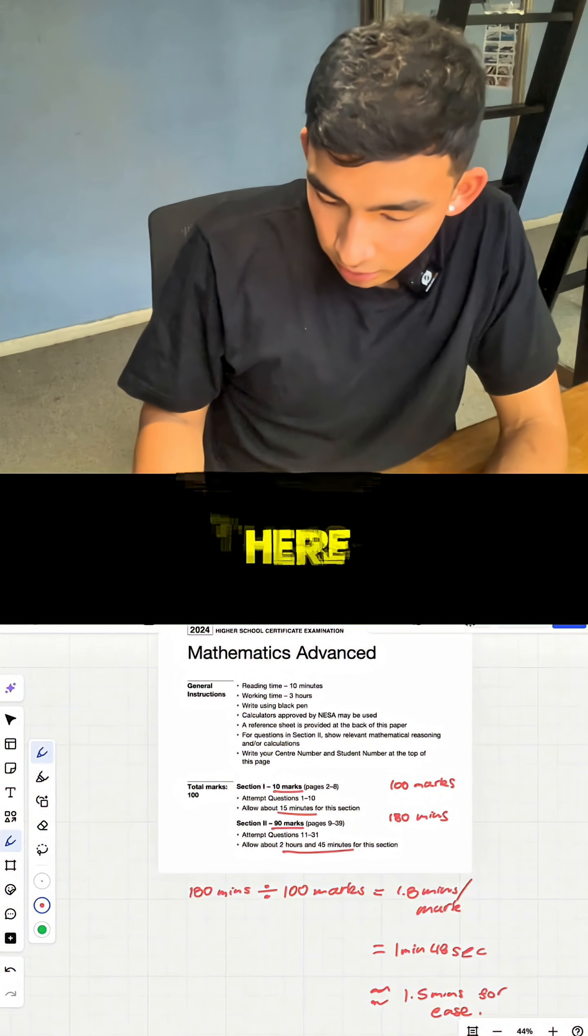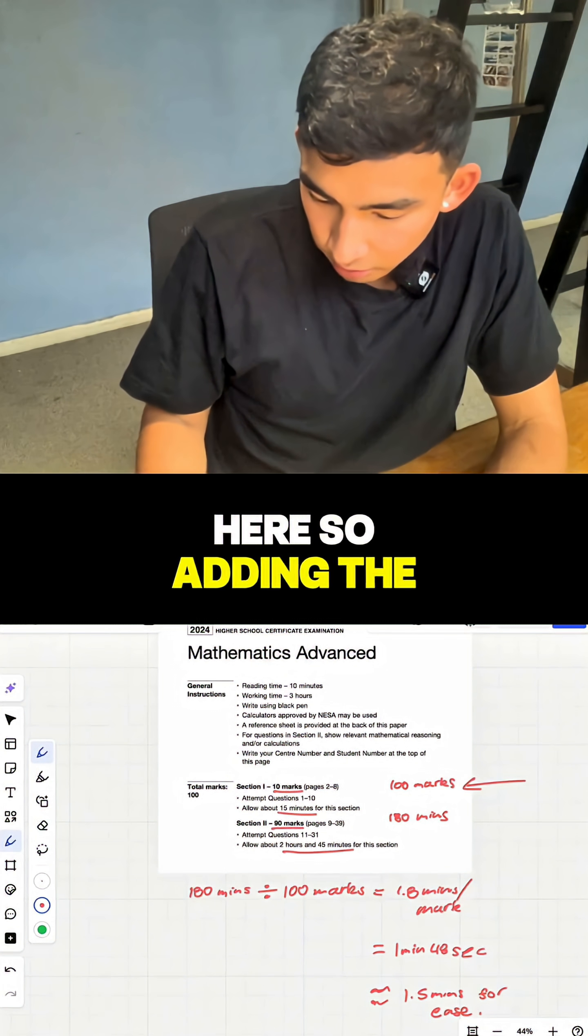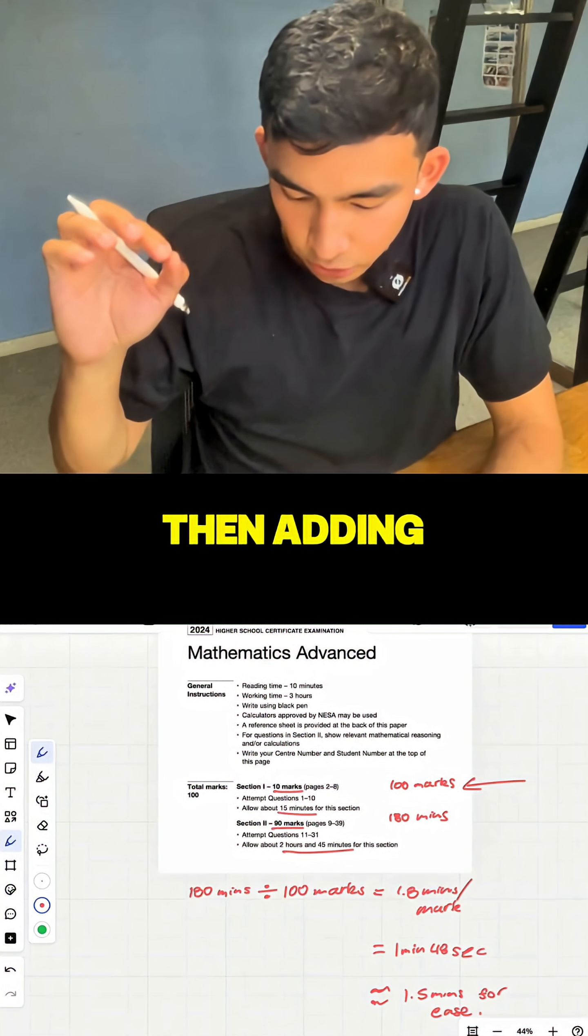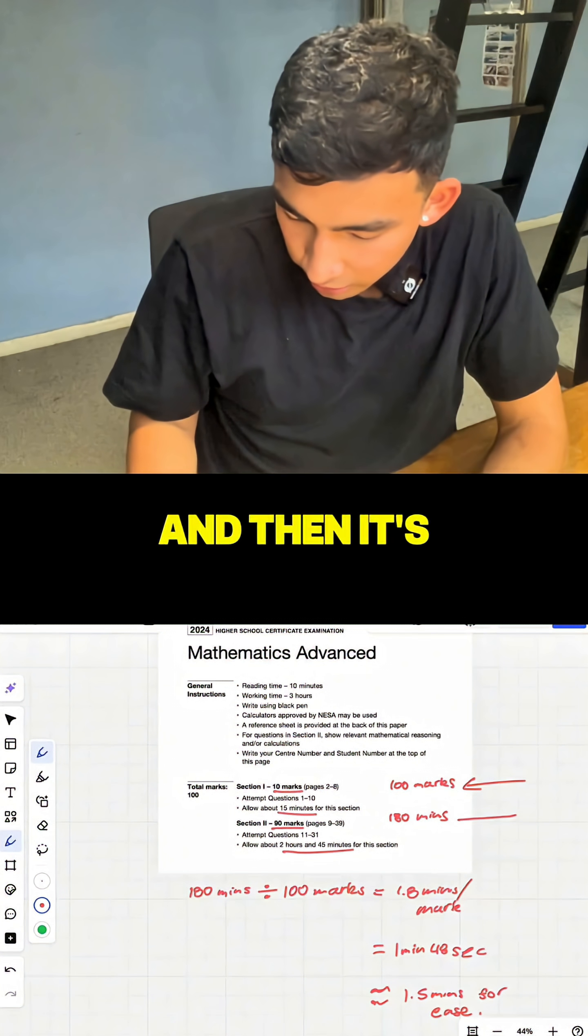So for example, in this sample exam I've got here, this is a hundred marks. Adding the multiple choice and then adding the short answer, it's going to give us a hundred marks. And then it's going to be three hours which is 180 minutes.